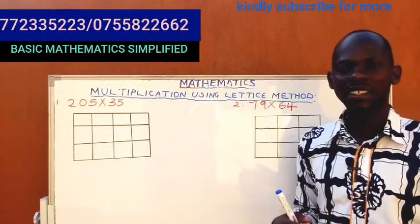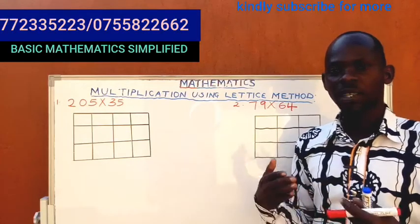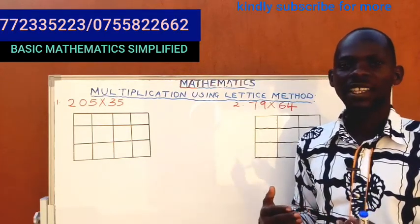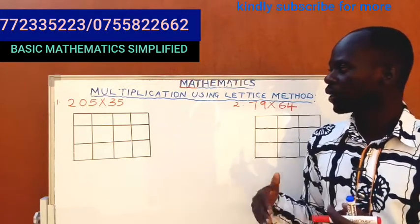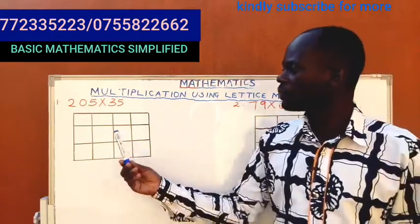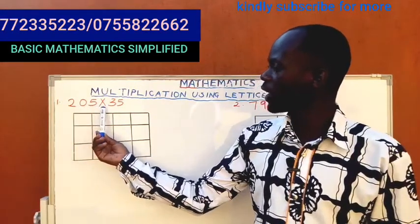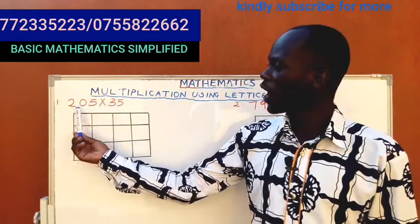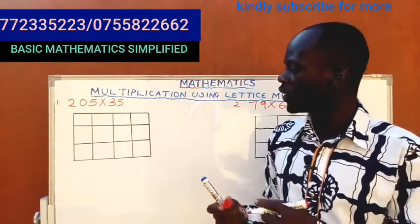Even if they're as big as what, children can easily multiply and find the answers without any problem. Now we have the first number, 205 multiplied by 35. So these squares are drawn, you can see we have one, two, three, four, then one, two, three.